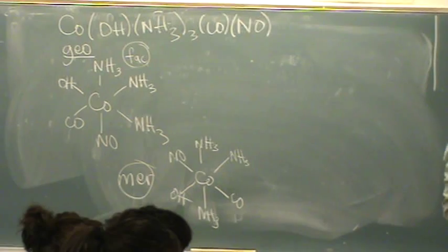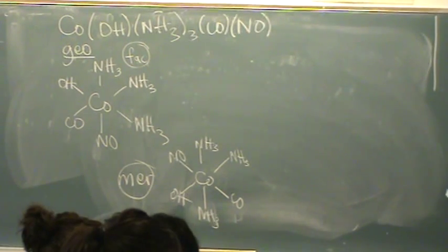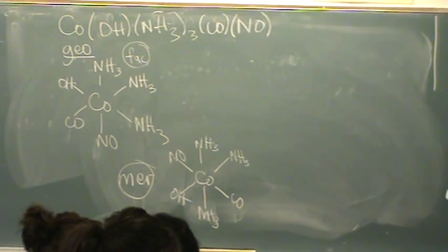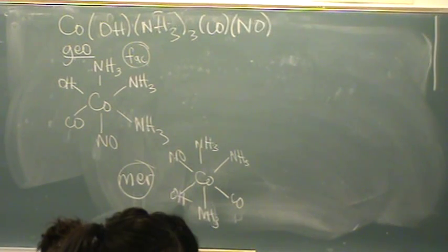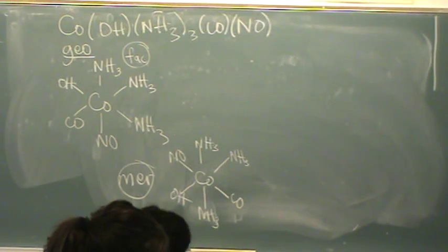So I've got fac and mer — I've got my geometric isomers. Those are the only possible ones I could have. There's no cis and trans because there's no two ligands that are identical.